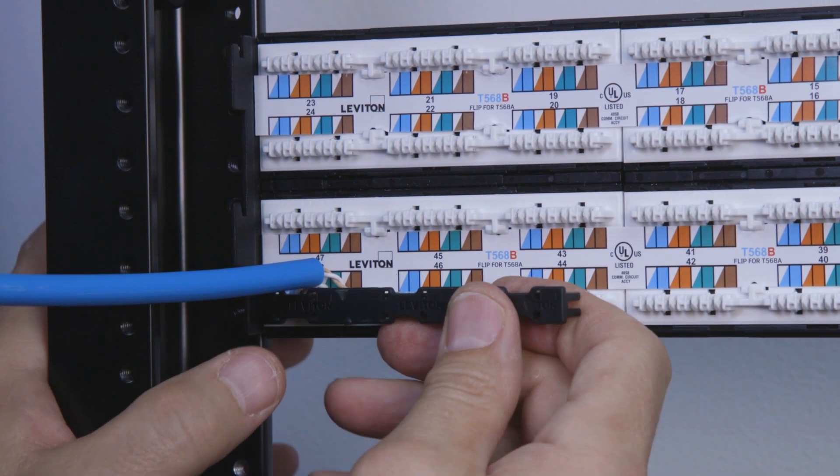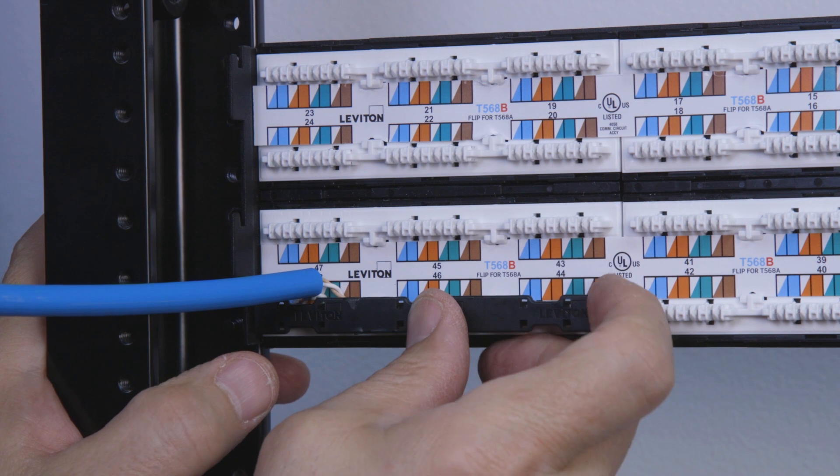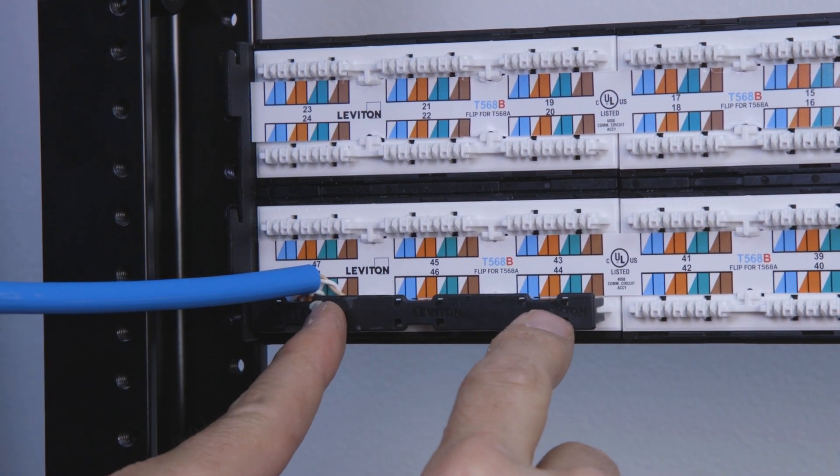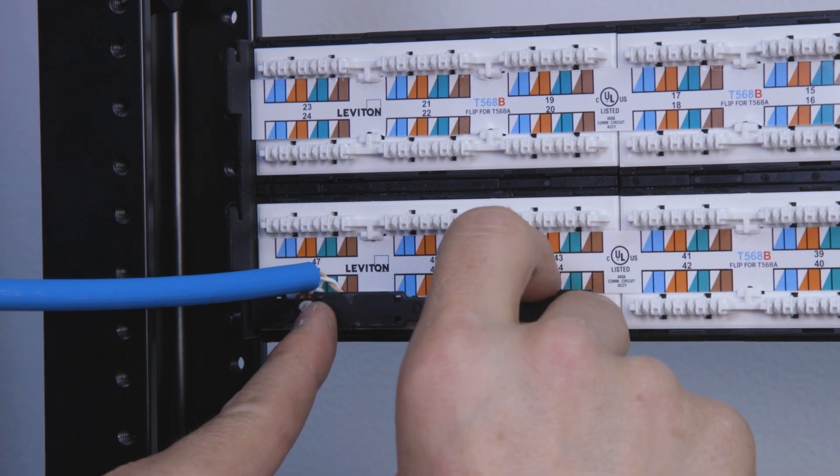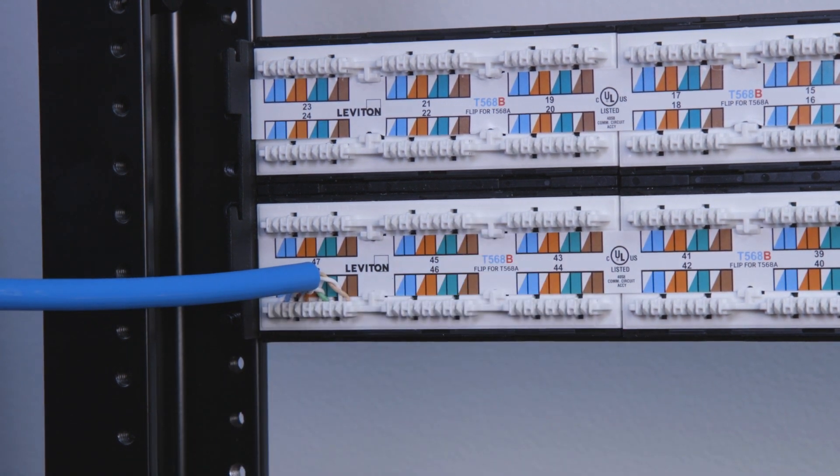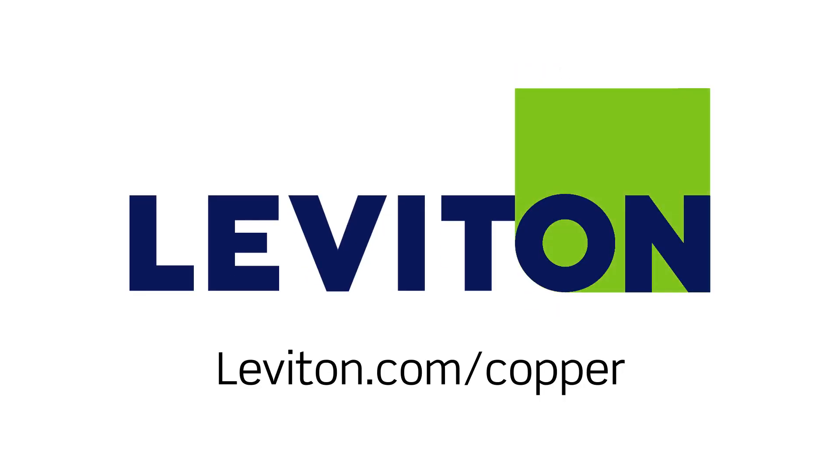This particular patch panel includes dust covers that snap over groups of three IDCs. Once a row is fully terminated, cover them to protect and secure the wiring and to provide an overall organized finish. For more information, please see www.leviton.com/copper.